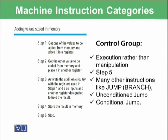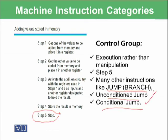The third group is the control group, which handles execution rather than data manipulation. It is essentially the overall controller of the CPU, determining what needs to be done at any given time. For example, in the previous algorithm, the 'stop' instruction is a control group instruction. Control instructions also include jump or branch instructions — both unconditional and conditional jumps.